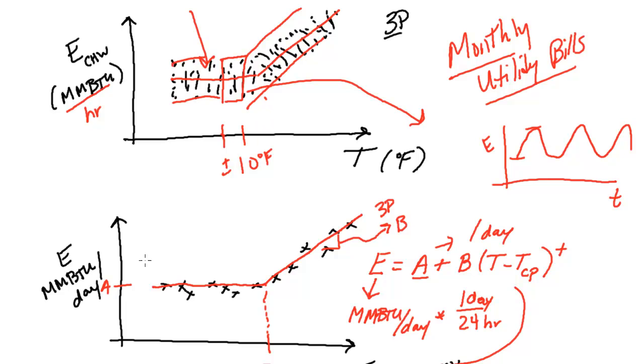So, this method always will start looking at monthly utility bills, and they're day normalized. So, again, this is an average energy use per day for a given month. And if you fit one of these linear change point models, you'll get something like this. And this is just one example. There's different model shapes, but this is one. And you're hoping that this has a pretty good fit in this method.